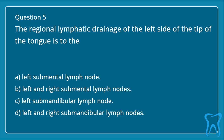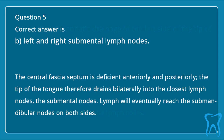Question 5. The regional lymphatic drainage of the left side of the tip of the tongue is to the: A. Left submental lymph node. B. Left and right submental lymph nodes. C. Left submandibular lymph node. D. Left and right submandibular lymph nodes. The correct answer is B: left and right submental lymph nodes. The central fascial septum is deficient anteriorly and posteriorly, so the tip of the tongue drains bilaterally into the closest lymph nodes — the submental nodes. Lymph will eventually reach the submandibular nodes on both sides.